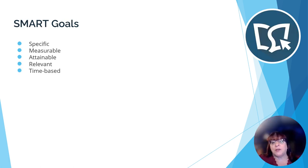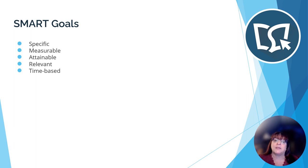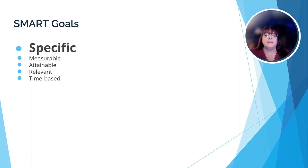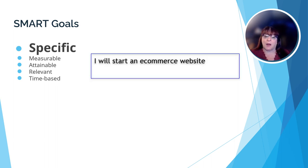We talked earlier about the project charter containing the goals of the project — what it's hoped to be accomplished. Many project managers use a process called SMART goals to ensure that the project goals align with the organization's goals. They use the acronym SMART — S-M-A-R-T — to remind them of how goals should be developed. S stands for specific: the goals should be stated clearly and concisely. For example, 'I will start an e-commerce website.'